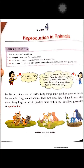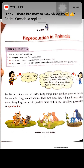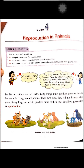Today we will discuss our fourth chapter of science for class four. The chapter name is Reproduction in Animals. We will talk about reproduction in animals. In this chapter, we will read the need for reproduction, understand various ways in which animals reproduce, and appreciate the parental care shown by certain animals toward their young ones.